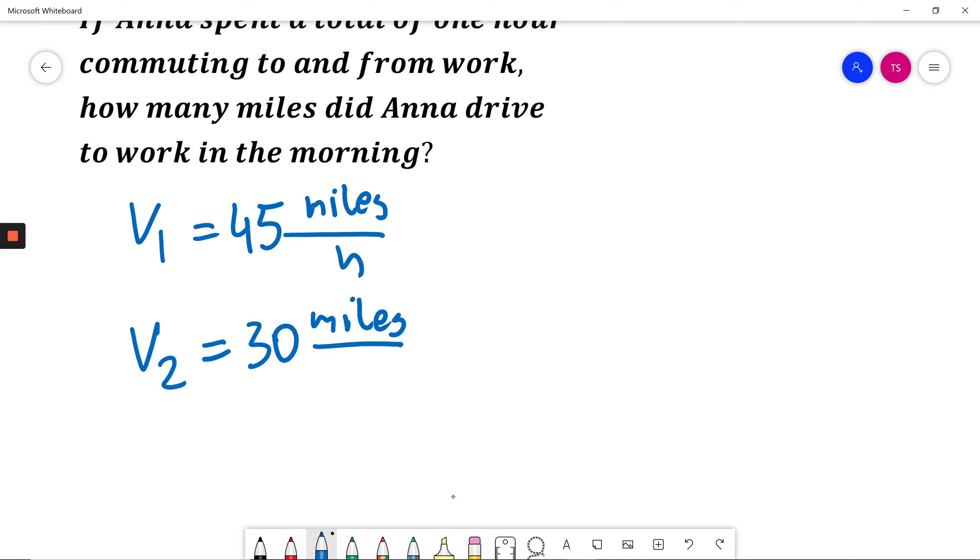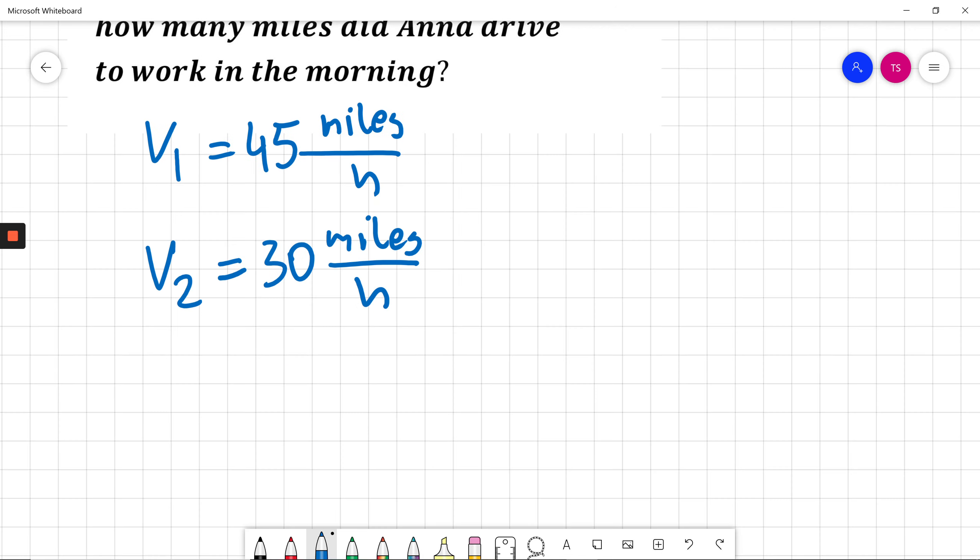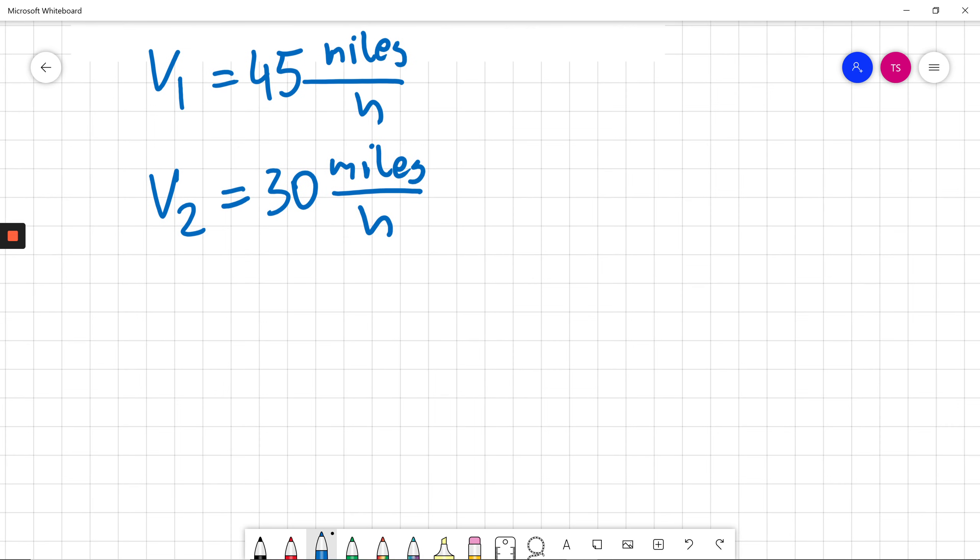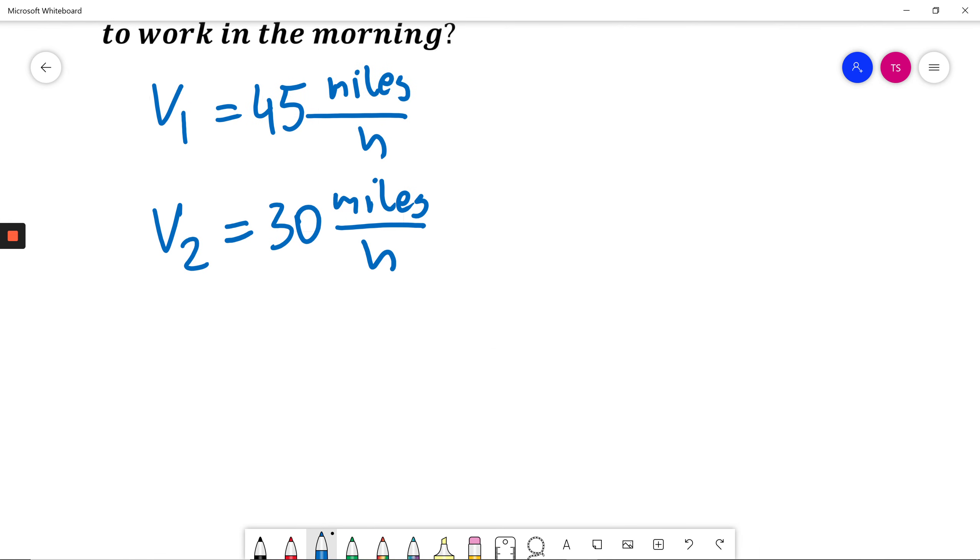I will just write what I know. If Anna spent a total of one hour commuting to and from work, so T total time will be equal to T1 to work plus T2 from work home. And this is equal to 1.